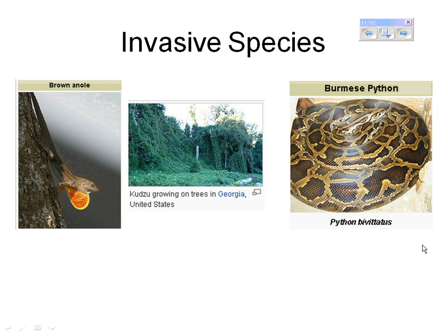Another example would be kudzu, a vine and one of the worst invasive species in the United States. It was purposely brought over from Japan — we thought it would help with soil erosion. As you can see from the picture, it has grown over all of these trees. The Burmese python is currently in the Everglades, preying on small alligators and birds, so it's important we try to remove them. There are even contests where catching the biggest python wins a cash prize. We see the same thing with the lionfish.